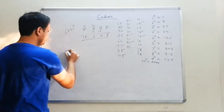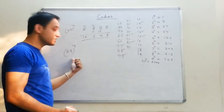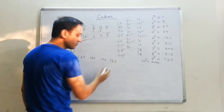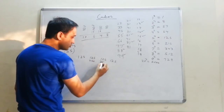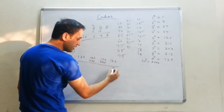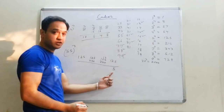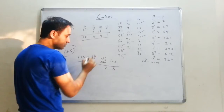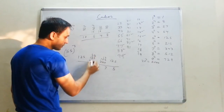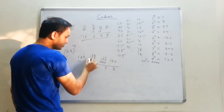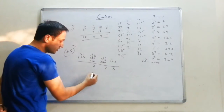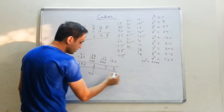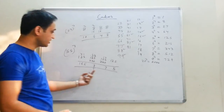For cube of 55: cube of 5 is 125, written four times as 125, 125, 125, 125. Then double the inner digits: 250 and 250. Add: 5, then 12 — carry 1. 5 plus 2 is 7, plus 1 is 8. 2 plus 1 is 3, carry forward. 5 plus 8 is 13, write 3 carry 1. Then 11, write 1 carry 1. The answer is 166,375.